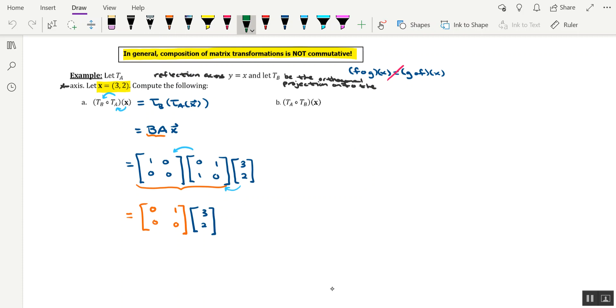Anyway, the resulting vector here is going to be 2, 0. Of course, you can write this in comma delimited form, 2, 0.